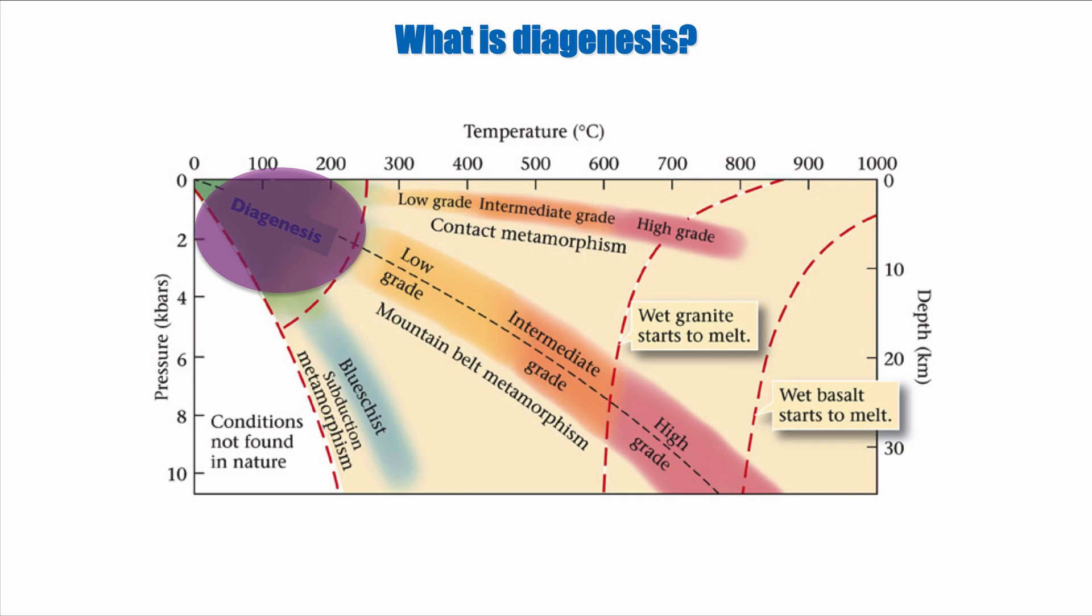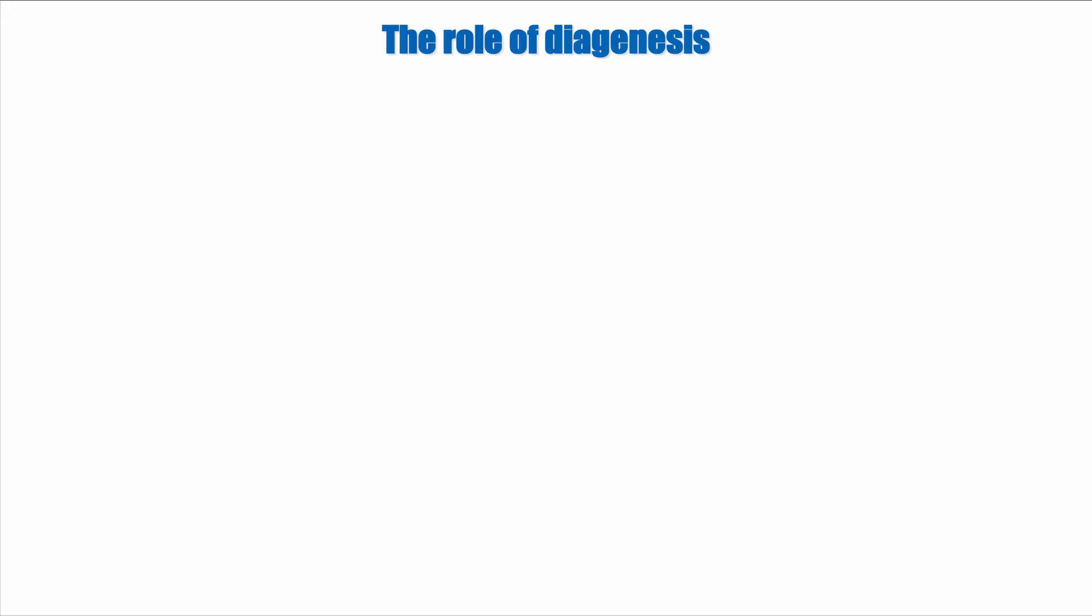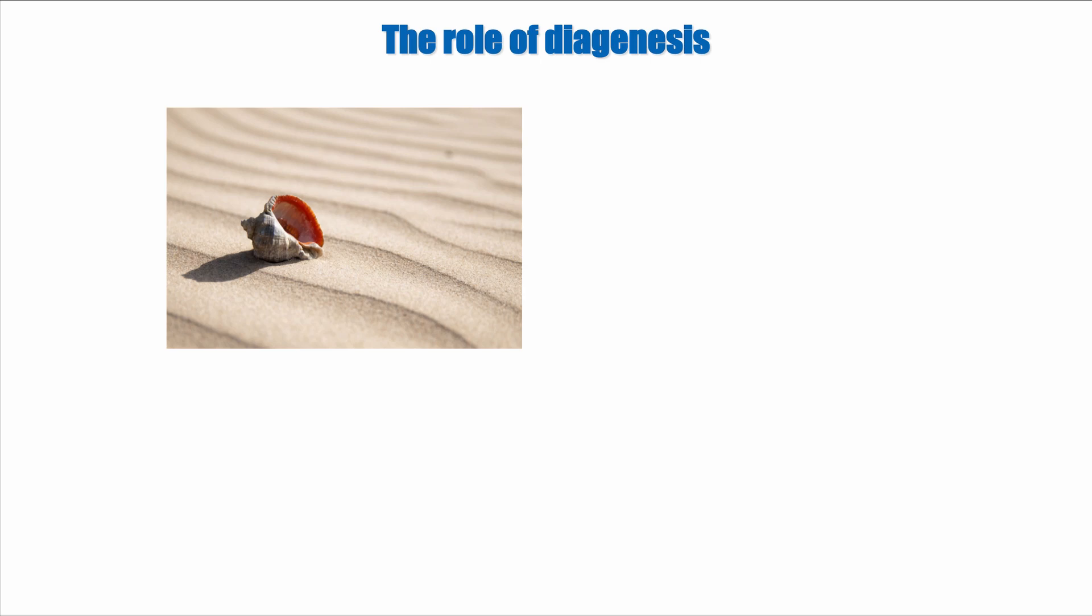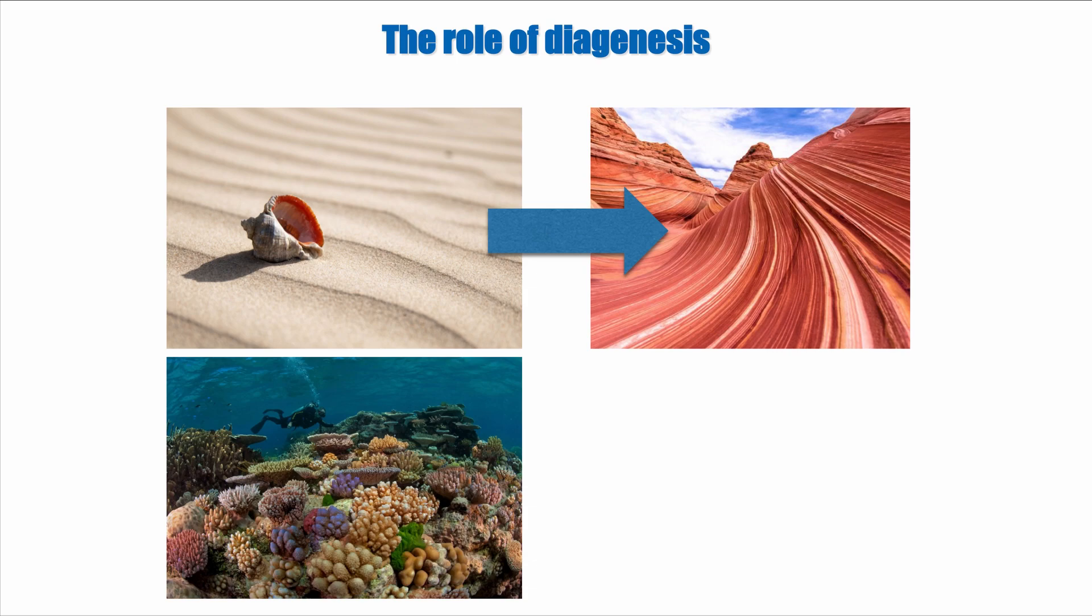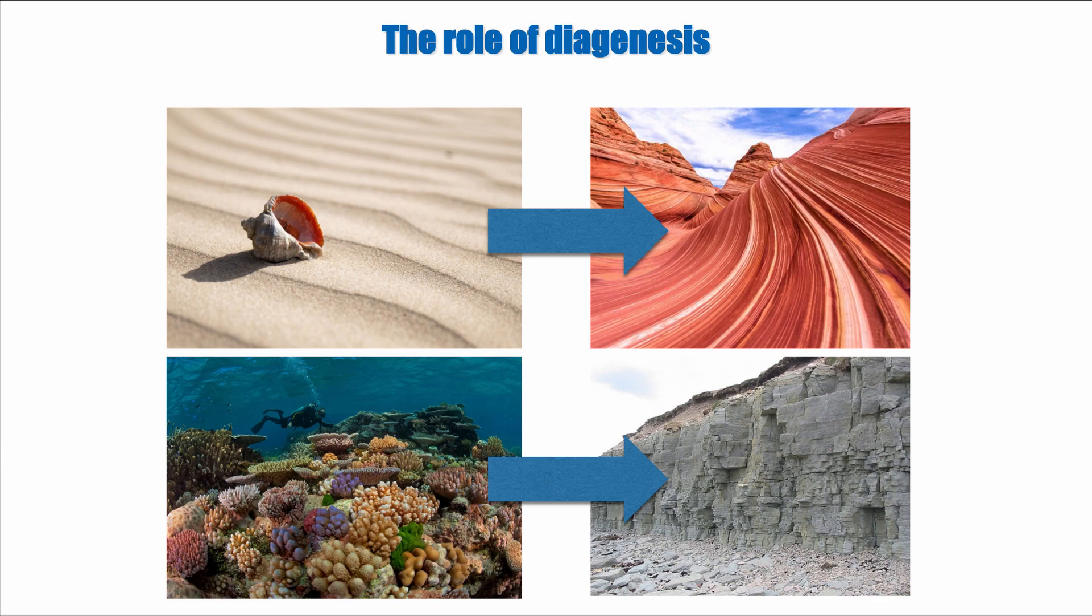The distinction between diagenesis and metamorphism can be expressed this way. Diagenesis results in sedimentary rocks. Metamorphism results in metamorphic rocks. So in a way we really are going to look at how sediments become rock in sedimentary systems today, how sediments like loose sand becomes a sandstone or how carbonate sediments becomes a limestone. That's what diagenesis is all about.